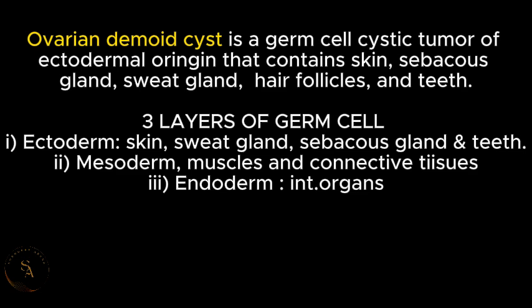Recall that in the early stage of embryonic development, two germ cells combine to form a gamete. These germ cells have three layers: the endoderm, which gives rise to the skin, sweat glands, sebaceous glands, and teeth; the mesoderm, which develops into the muscles and connective tissue; and the endoderm, which develops into the internal organs.